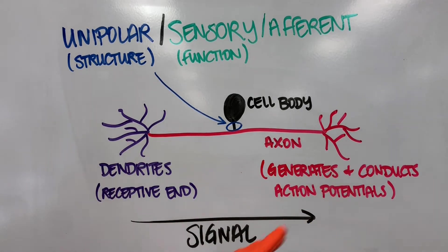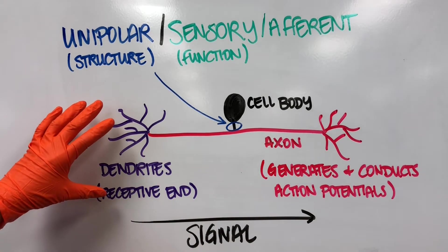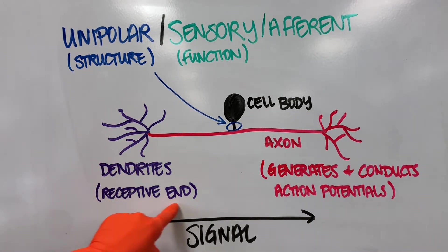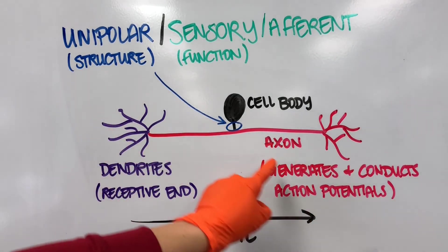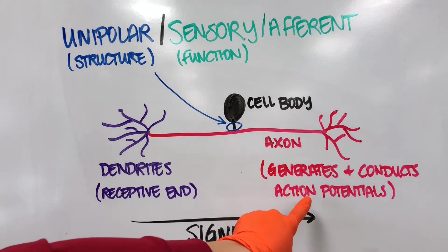When we're talking about how signals travel across neurons, we have a direction. The dendrites are the receptive end of the neuron—that's why these are colored purple right here—the receptive end. That signal will travel along the axon, and the axon is the end that is responsible for generating and conducting those action potentials that release neurotransmitters.